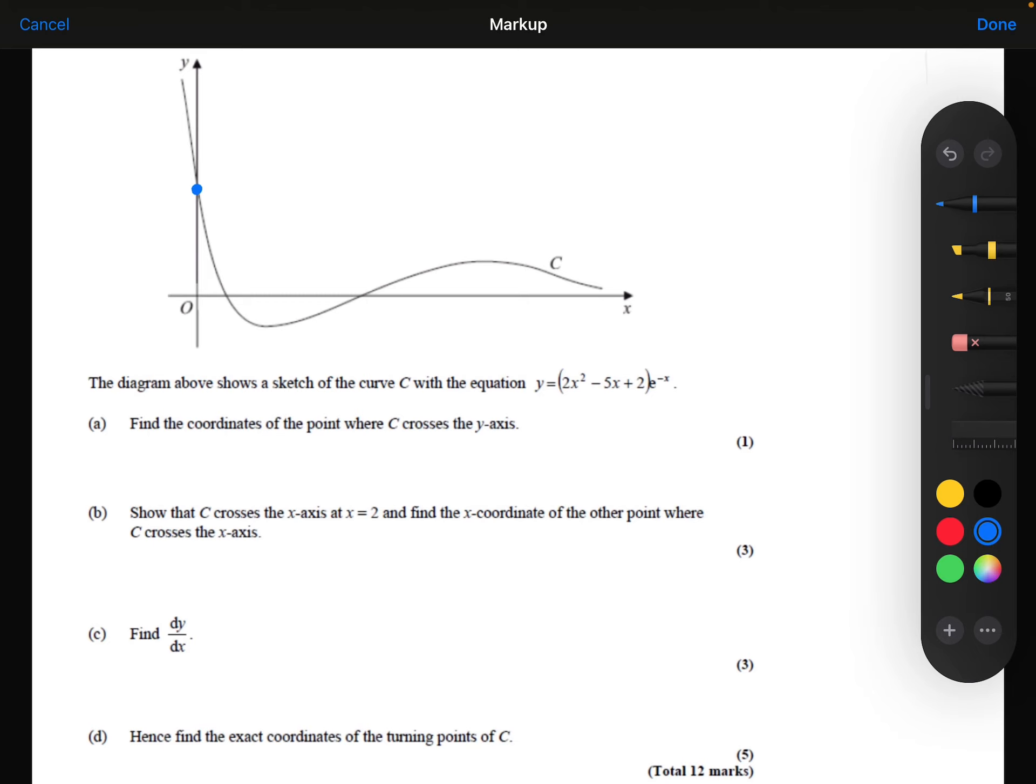So I know it crosses the y-axis where x equals 0. If I substitute 0 into the formula, I'll get y equals 2 times 0 squared minus 5 times 0 plus 2 times e to the power minus 0, which gives 2 times e to the power 0, which is 2. So that's the coordinate (0, 2). That's my answer to part A.